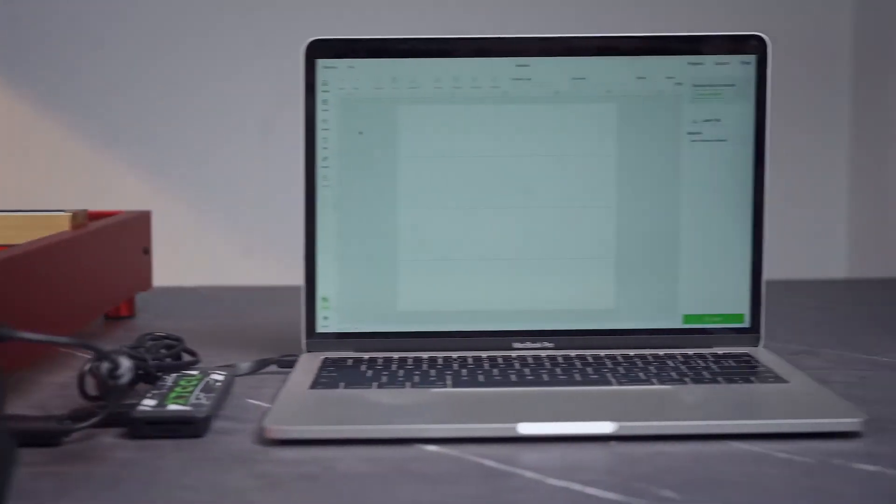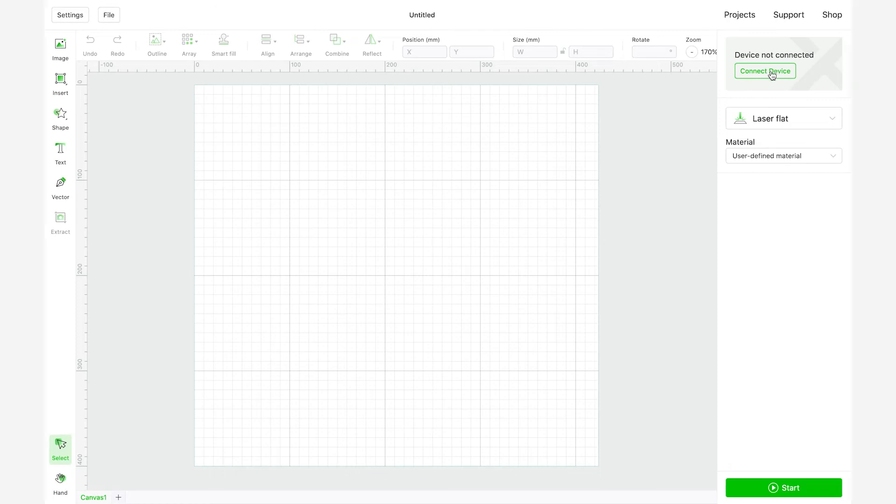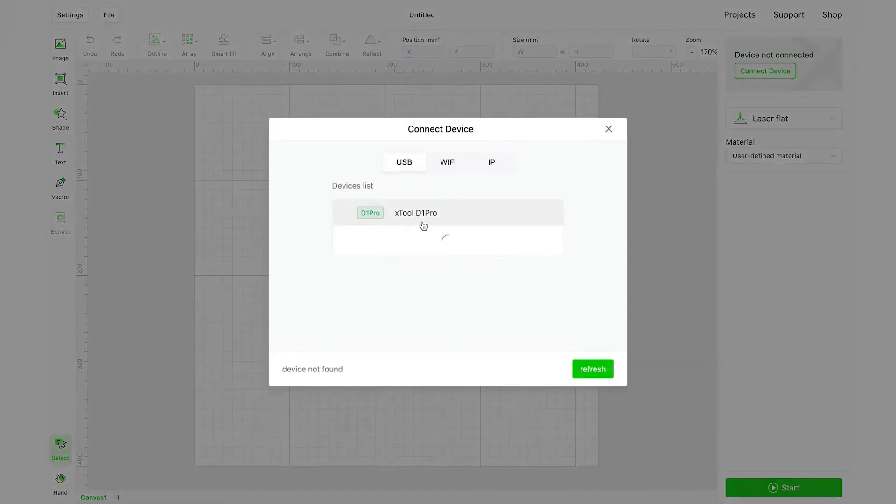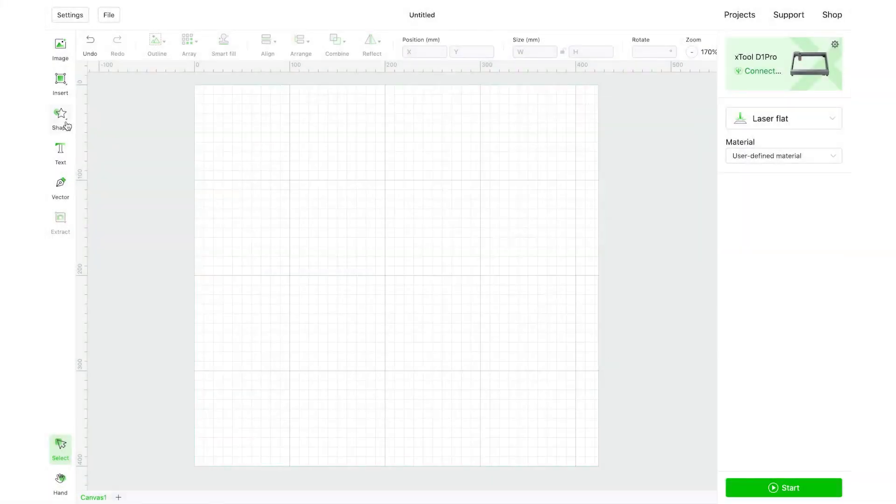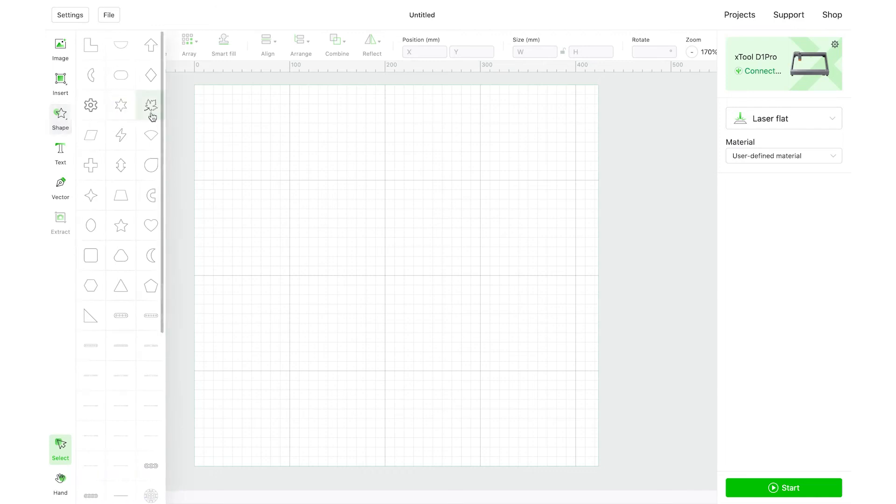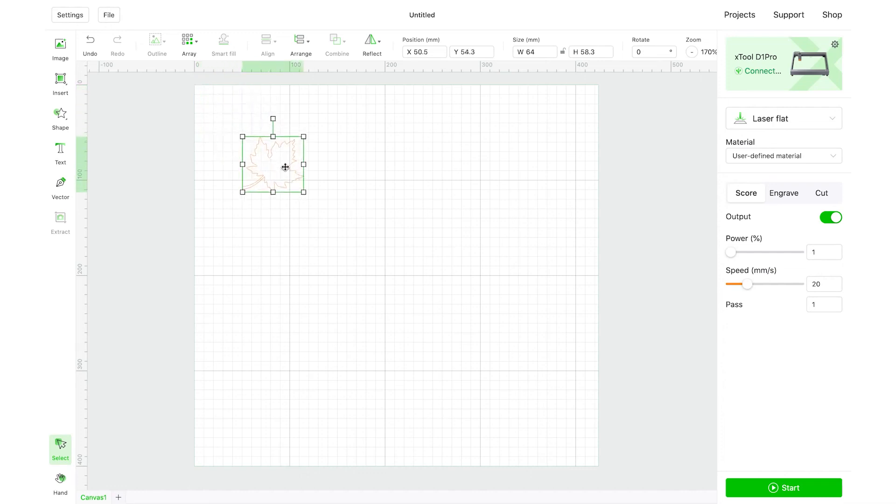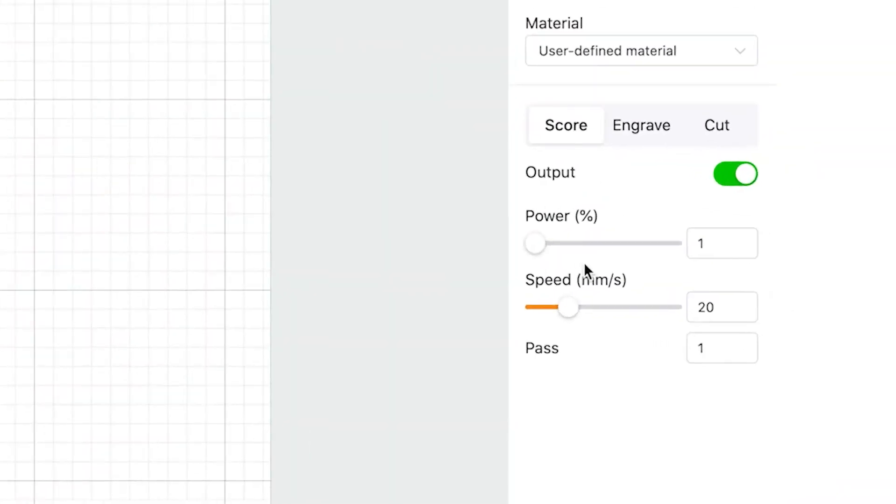Open XTool Creative Space. Connect your device to XCS. Insert a shape or other elements. Set the processing parameters and then click Start.